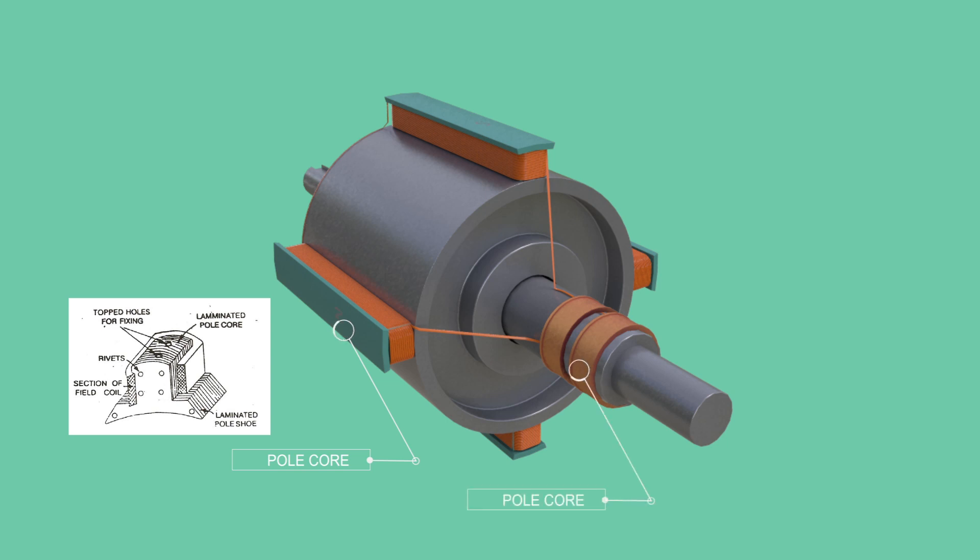DC current is supplied to the rotor with a pair of slip rings. This is the reason why the rotating magnetic field approach is used in alternators.